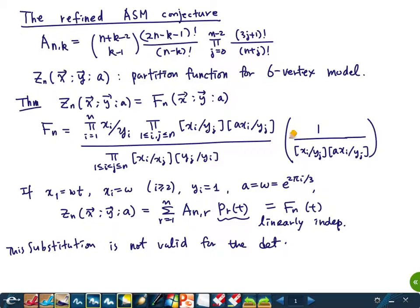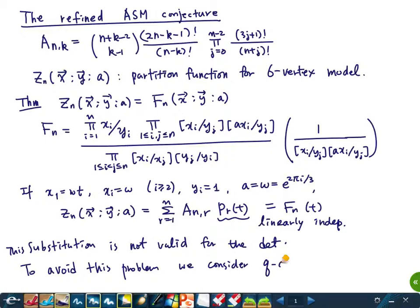To fix this problem, we consider a q-version — a q-analog — so that we can plug in the substitution with an additional parameter q, compute a bit, and then finally set q equal to 1 to get just the number we want. To avoid the zero-denominator problem, we consider the q-analog and then let q approach 1 so that we get a non-zero denominator.